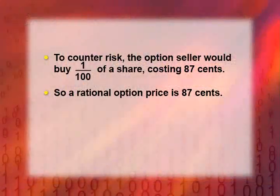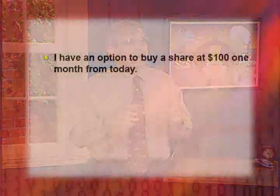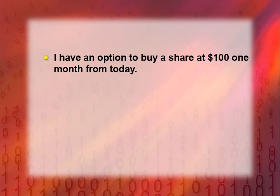Now let's look at an example that's a little more interesting, with more variables, though still a great simplification relative to actual reality. Suppose we're talking about an option associated with a stock that today is selling for $100, and the option gives me the right to buy one share of stock for $100 one month from today — the current price of the stock.